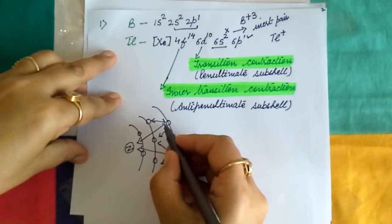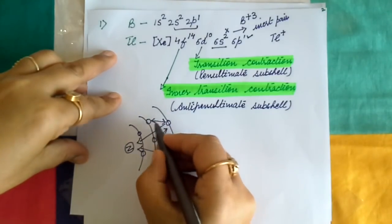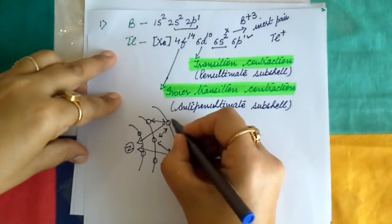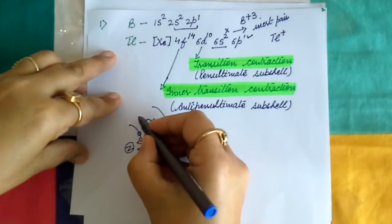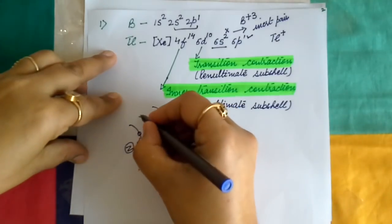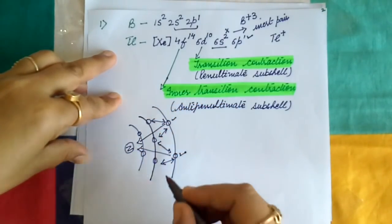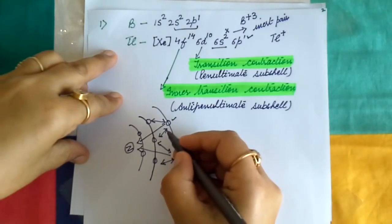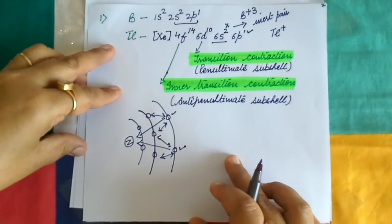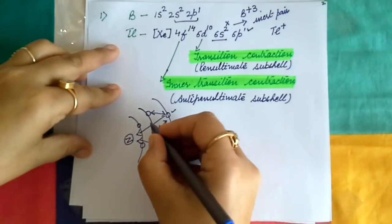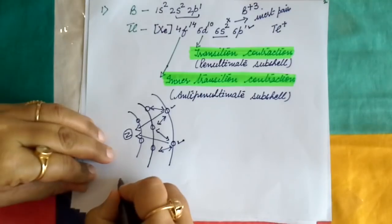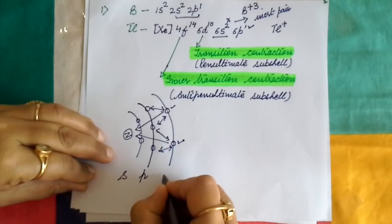The inner electrons oppose the effect of the nucleus because the nucleus attracts electrons toward itself while the inner electrons repel the outer electrons, thereby opposing the nuclear attraction. As a result, the overall effect of the nucleus on the outer electrons is reduced. In other words, the inner electrons screen the outer electrons from the nucleus, so the effective nuclear charge experienced by the outer electrons decreases. This screening effect is maximum for s orbitals and decreases as we move from s to f orbitals.